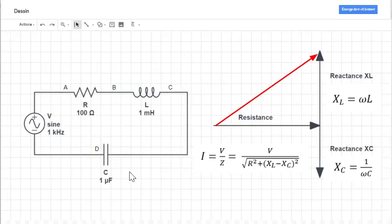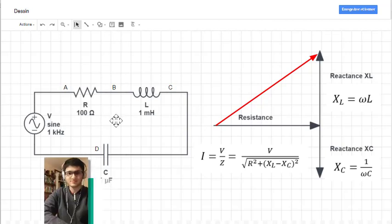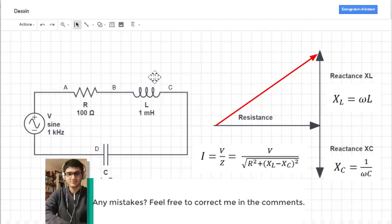I hope that was helpful. Before I leave, let's think about what the voltage across AC would be, or the voltage across BD would be. Well, very simply, that's just the voltage drops added together.